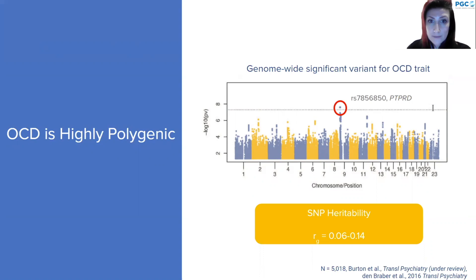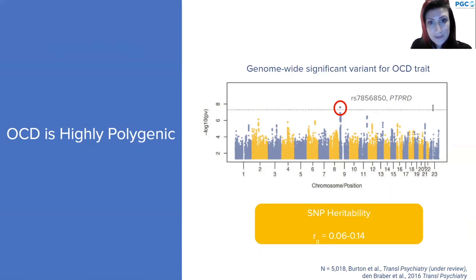There have also been two genome-wide association studies of obsessive-compulsive traits and symptoms in the general population. Interestingly, both have identified genome-wide significant variants. The most recent, from the group I work with, showed a genome-wide significant variant in PTPRD, a gene that has come up several times in OCD genetic studies. This particular variant was also associated with OCD diagnosis in independent samples, providing converging evidence.